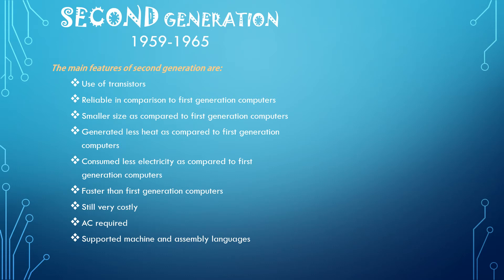Second generation computers went from 1959 to 1965. In this generation, computers were very cheap compared to the first generation, consumed less power, were more compact, more reliable, and faster compared to those that used vacuum tubes. Magnetic cores were used for primary memory, and for secondary storage they used magnetic tapes and disks.